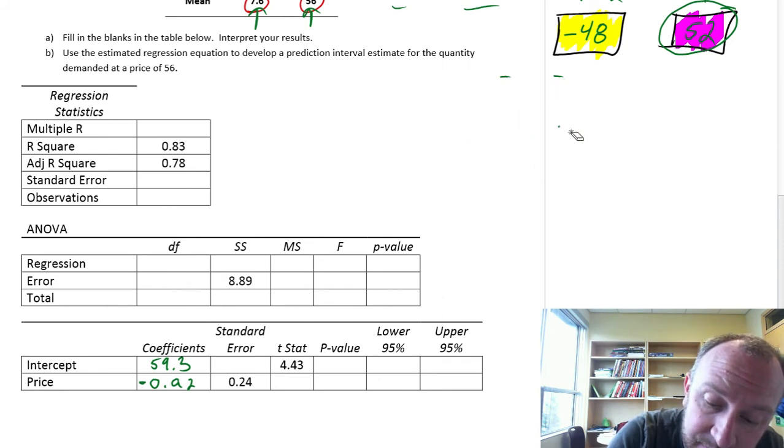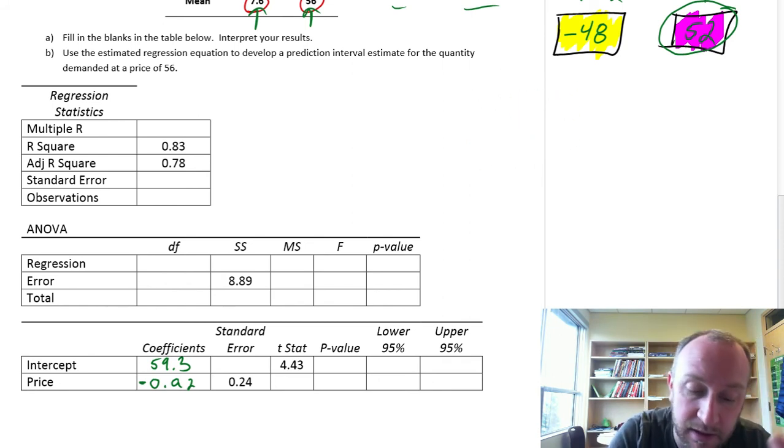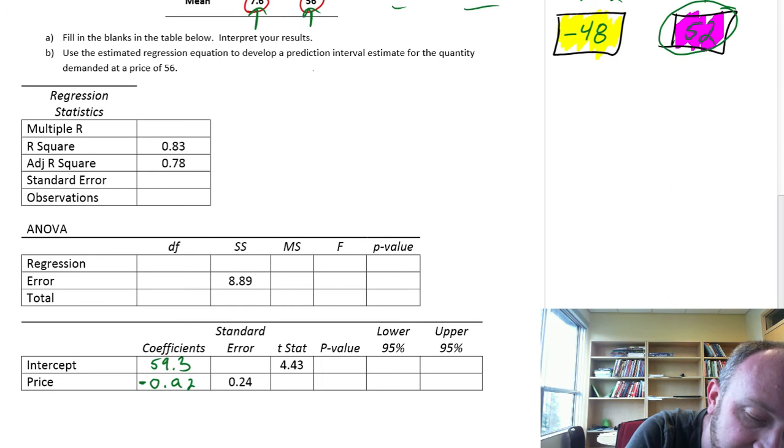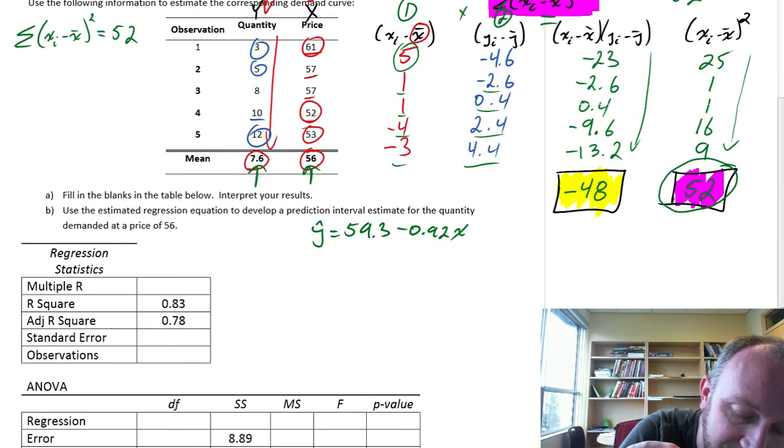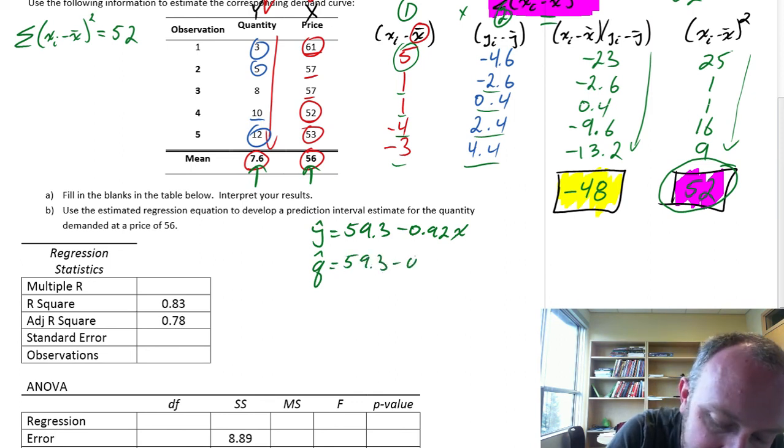Finally, now we have our key result. We can write this out: ŷ is 59.3 minus 0.92x. Of course, this is a demand equation that we've calculated. We can call this q-hat: quantity is negatively related to price.